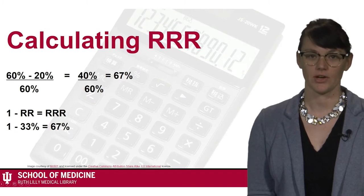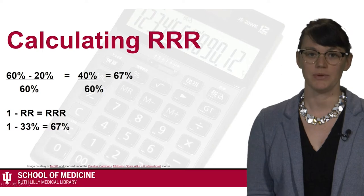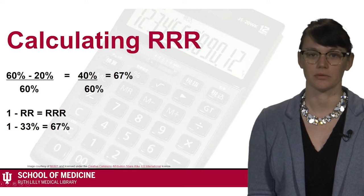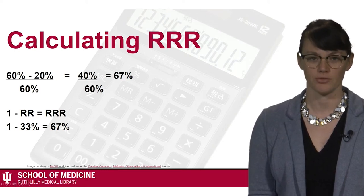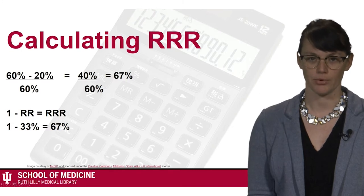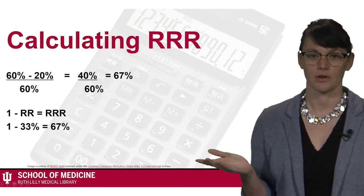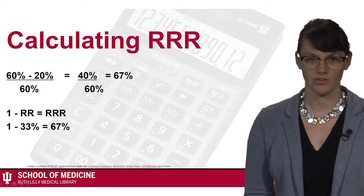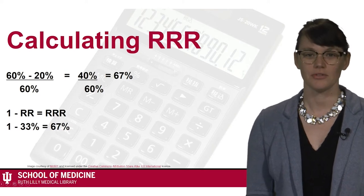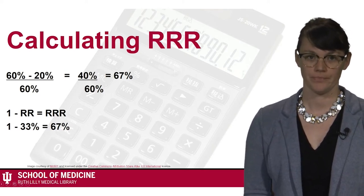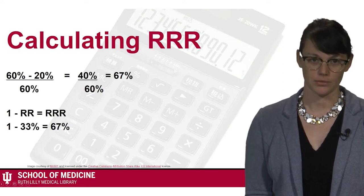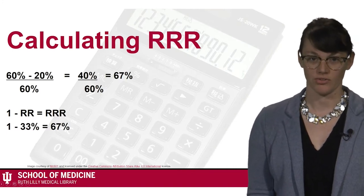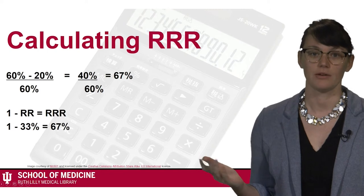Using our numbers from the previous video, to calculate the RRR, take the risk in the control group — 60% — and subtract the risk in the experimental group — 20% — to get 40%. Then divide that 40% by 60%, the risk in the control group. The RRR would be 67%. You can also use the formula: 1 minus RR equals RRR. So if the RR is 33%, we again get 67% for our RRR.